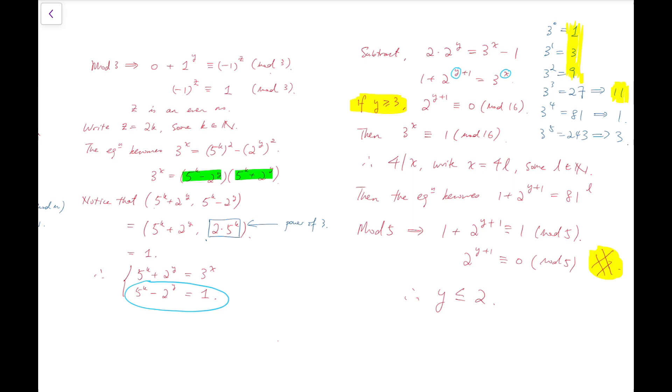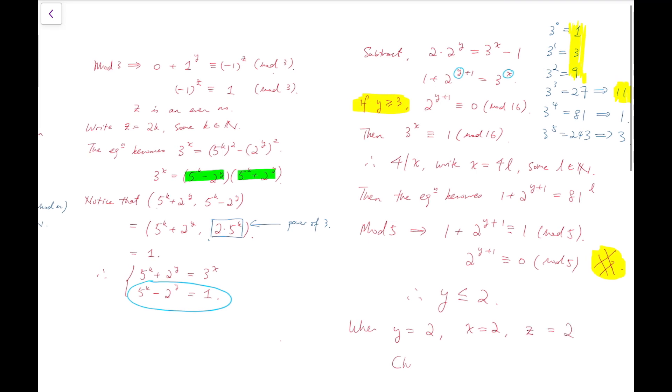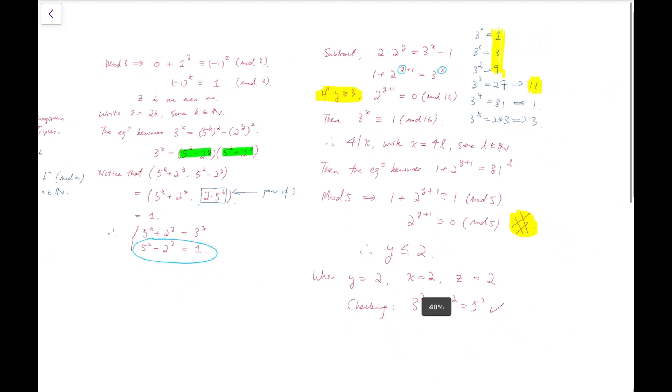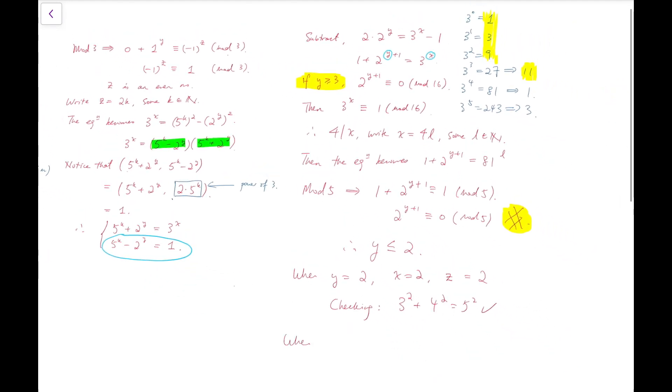So then we can check them one by one because there are only two possible cases left. When y is 2, then clearly we know that x equals 2 and similarly z equals to 2. Checking, 3 to the 2 plus 4 to the 2 equals 5 to the 2, tick. And when y equals 1, then we have 3 to the x equals 5, so no solution. This appears when we put y equals 1 back to this equation. So altogether we only have one solution triple which is that x, y, z are all equal to 2. So that's our final answer.